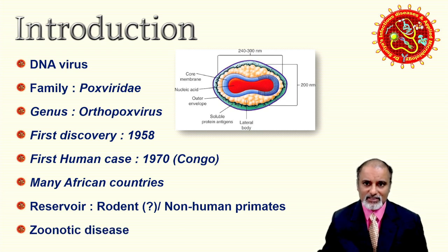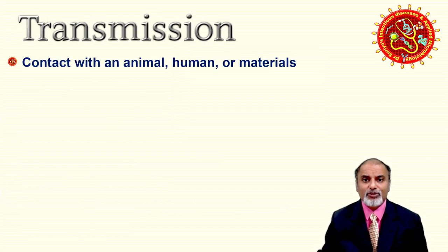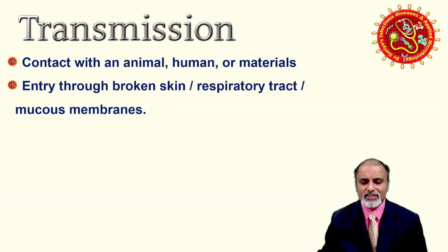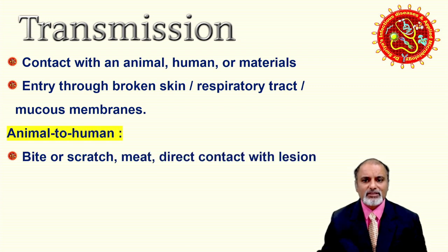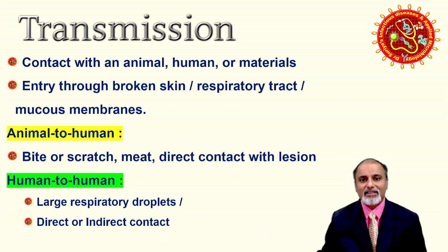Monkeypox is basically a zoonotic disease — animal to human — and after that human to human. Transmission is mainly due to contact with an infected animal, infected human, or infected materials. Routes include broken skin, respiratory droplets, or mucous membranes. Animal-to-human transmission is mainly by bite or scratch of the animal, consuming meat, or direct contact with animal lesions. Human-to-human transmission involves large droplets and direct or indirect contact, which includes sexual contact.